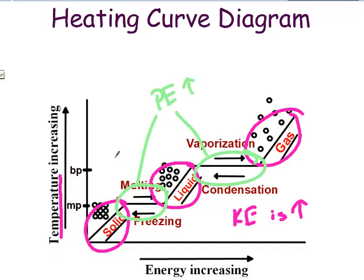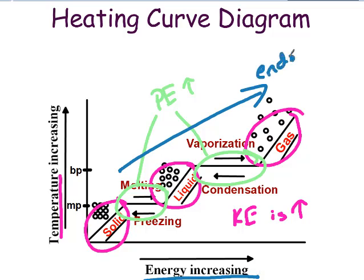Looking back at our graph, as we go up the graph, energy is increasing. So, all of these processes are endothermic as we go up the graph. Notice melting is endothermic. That's not getting cold. So, again, do not think getting cold or hot for phase changes.